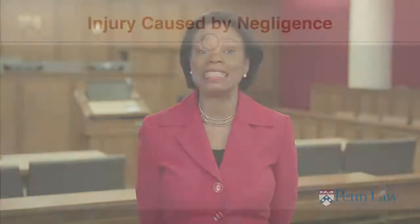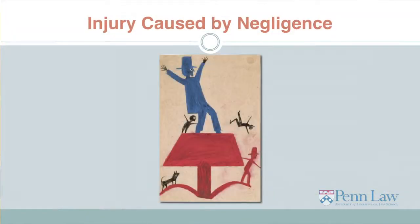He or she is at fault only if they acted intentionally — we now say knowingly or purposefully — or if they acted negligently. A negligent person is one who acts without the ordinary care or prudence suitable for the circumstances. We say, fails to act as a reasonable person of ordinary prudence. A reasonable person of ordinary prudence.